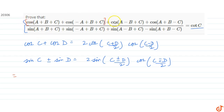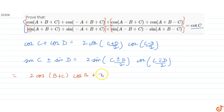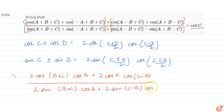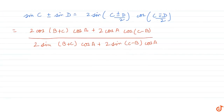We pair the first two terms and these two terms in the numerator, and similarly pair these two terms and these two terms in the denominator. What we get is: numerator equals 2cos(B+C)·cos(A) + 2cos(A)·cos(C−B), all divided by 2sin(B+C)·cos(A) + 2sin(C−B)·cos(A).